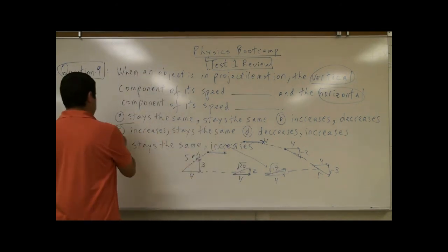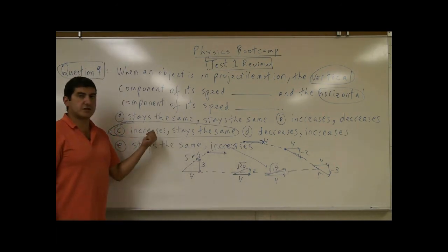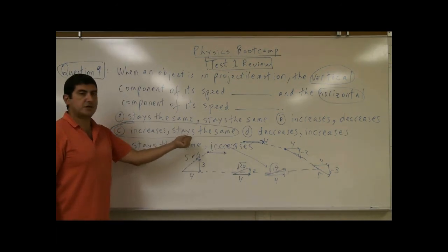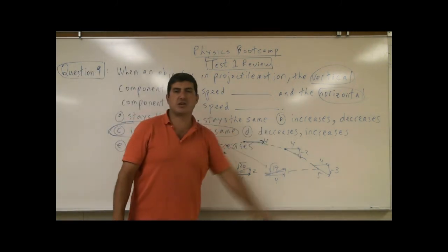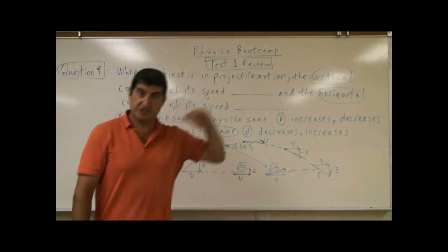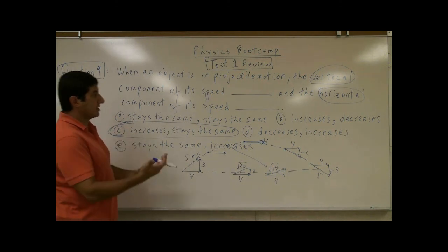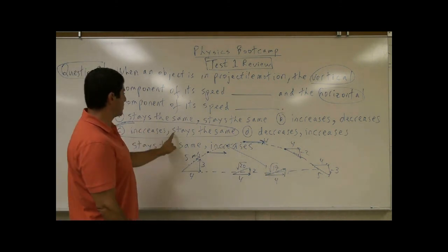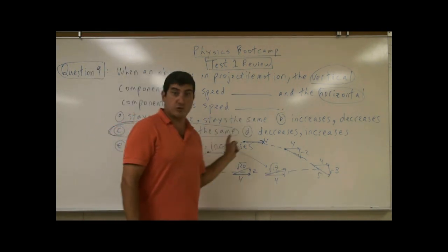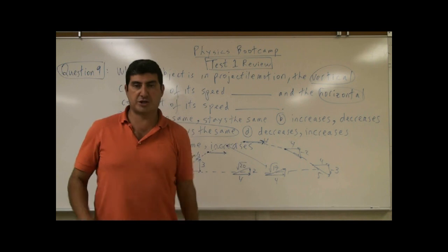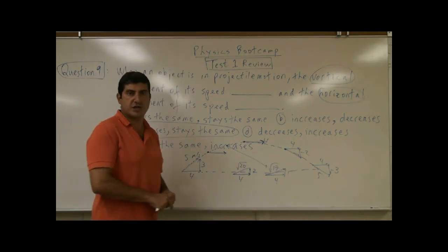The only one that makes sense is C — vertical component increases, horizontal component stays the same. This means in this problem the projectile was headed down, so the vertical speed was increasing. If 'decreases and stays the same' had also been a choice, there could have been two valid answers. Okay, we go to the next question.